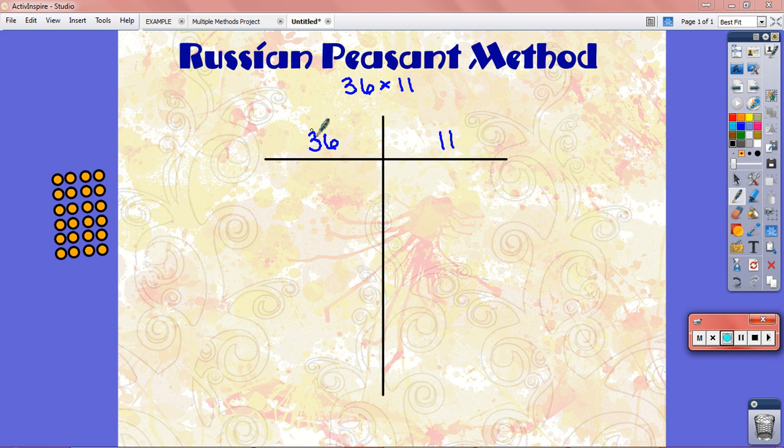I decided to cut 36 in half because it's even and because I'd rather double the smaller number. Because once you start doubling a lot, your numbers get bigger and a little bit harder to deal with. So 36 cut in half would be 18. It takes two 18s to make 36. But because I cut 36 in half, I have to double 11. Two 11s makes 22.